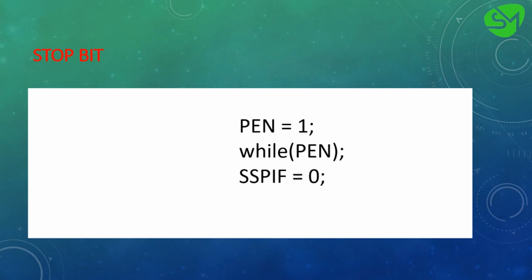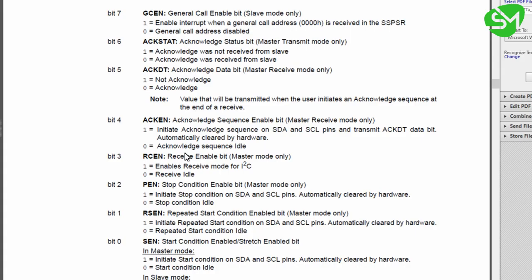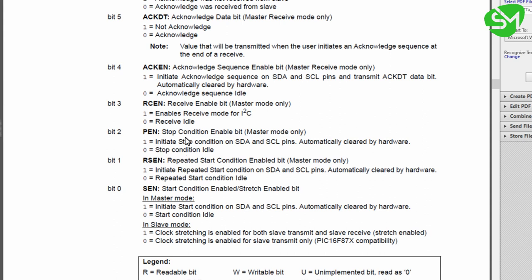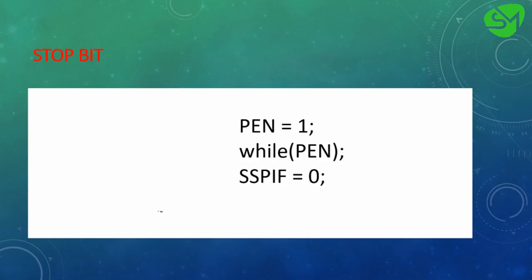For establishing the stop bit we use a similar procedure, except that we set the PEN bit from the SSPCON2 register. This PEN is the stop condition enable bit — it initiates the stop condition and is automatically cleared by the hardware. So we wait for PEN to go low, and once it does we clear the SSPIF flag.